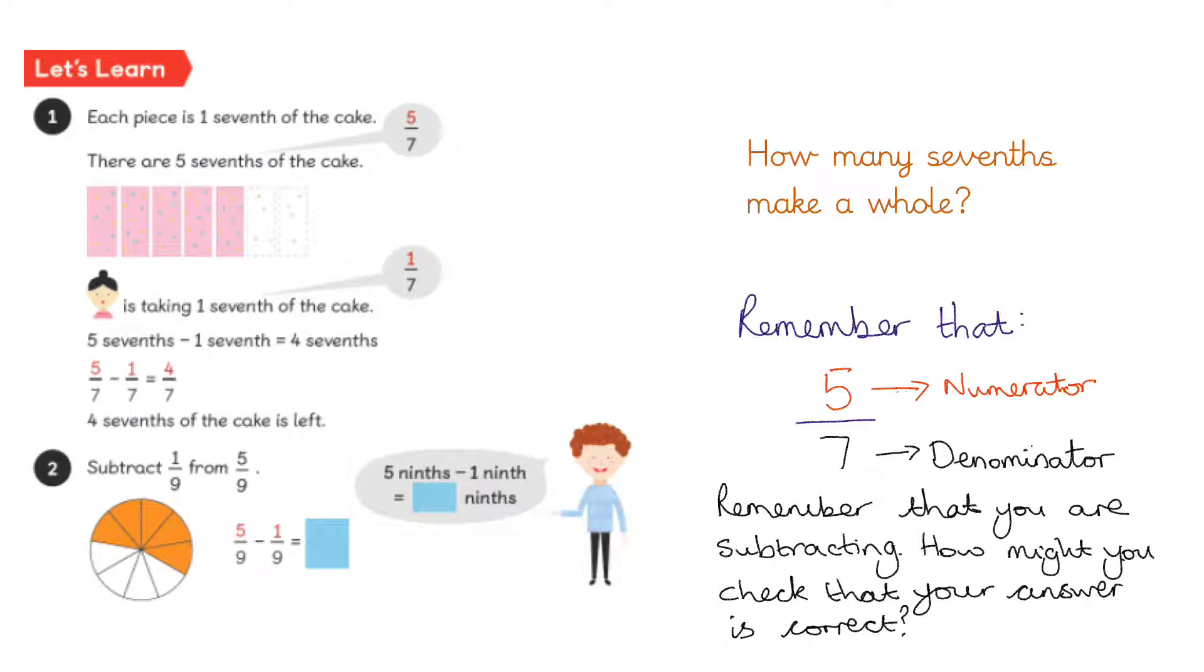How many pieces are shaded? There are five ninths shaded, and the question's asking us to take a further one ninth away. So five ninths take away one ninth is going to give us how many ninths?